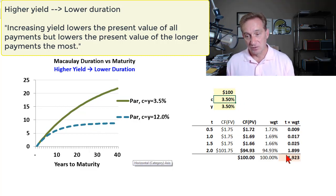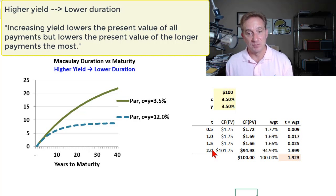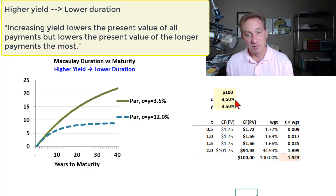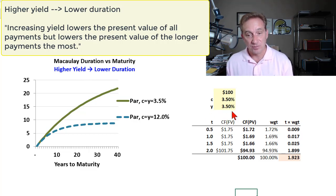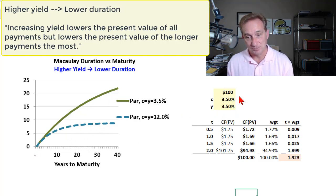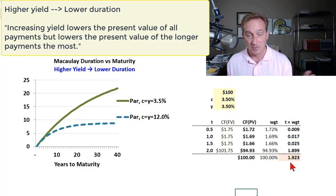For the 3.5% yield bond, the Macaulay duration is 1.923 years — almost the bond's maturity. As expected, if we had a zero coupon bond we'd be right at two years. But raising the coupon and yield to 3.5% drops it slightly below two years. Now, as we increase the yield — shifting to the higher yield bond — the Macaulay duration drops further.